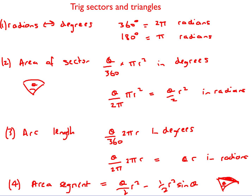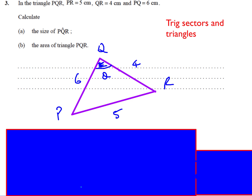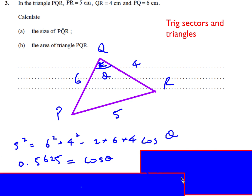Here's the first question: we're given a triangle and asked to calculate the size of angle PQR and the area of the triangle. We sketch it out — PR is 5, QR is 4, PQ is 6, and there's the angle.